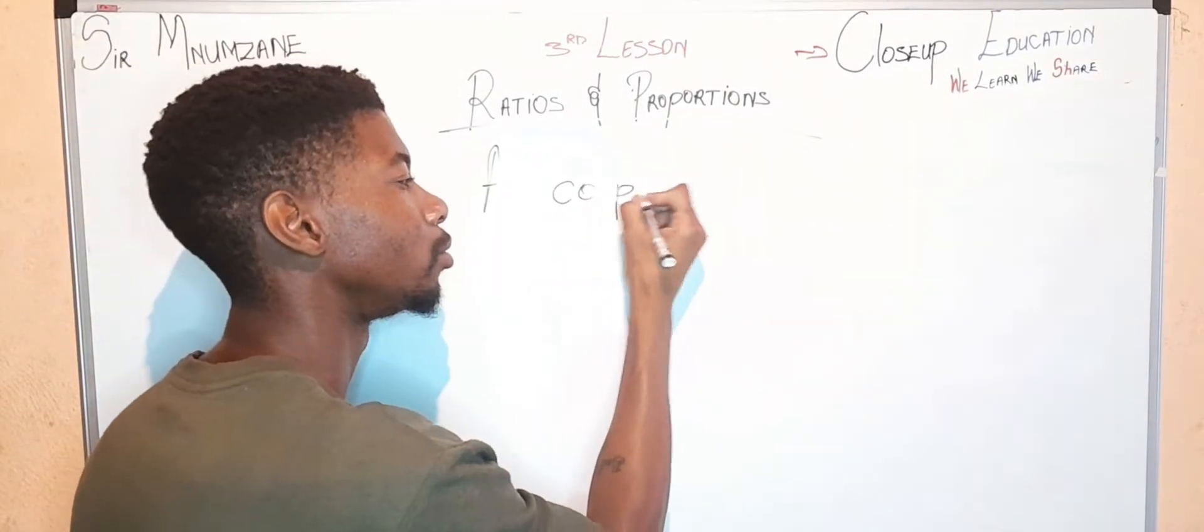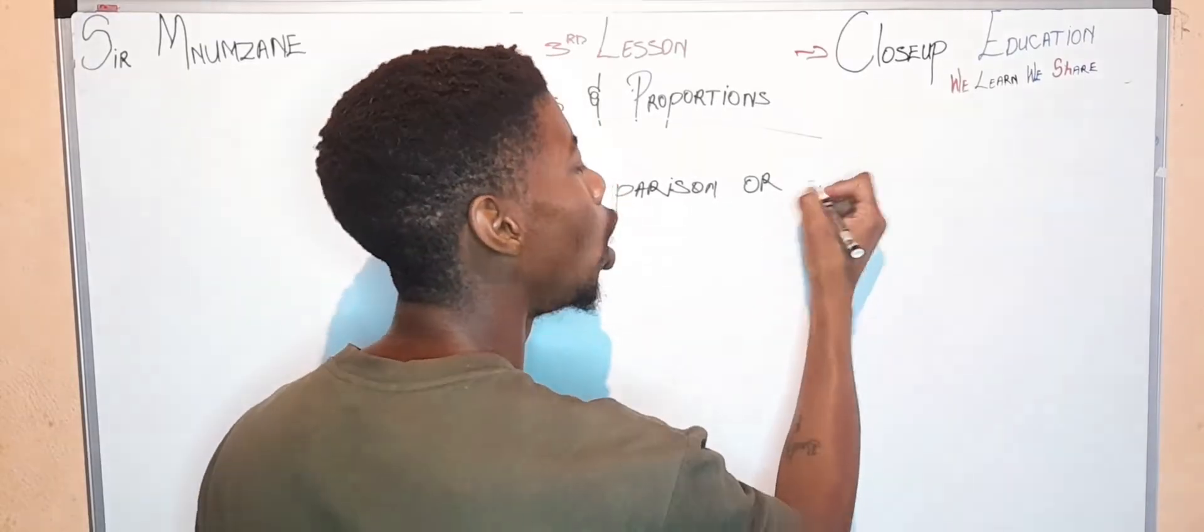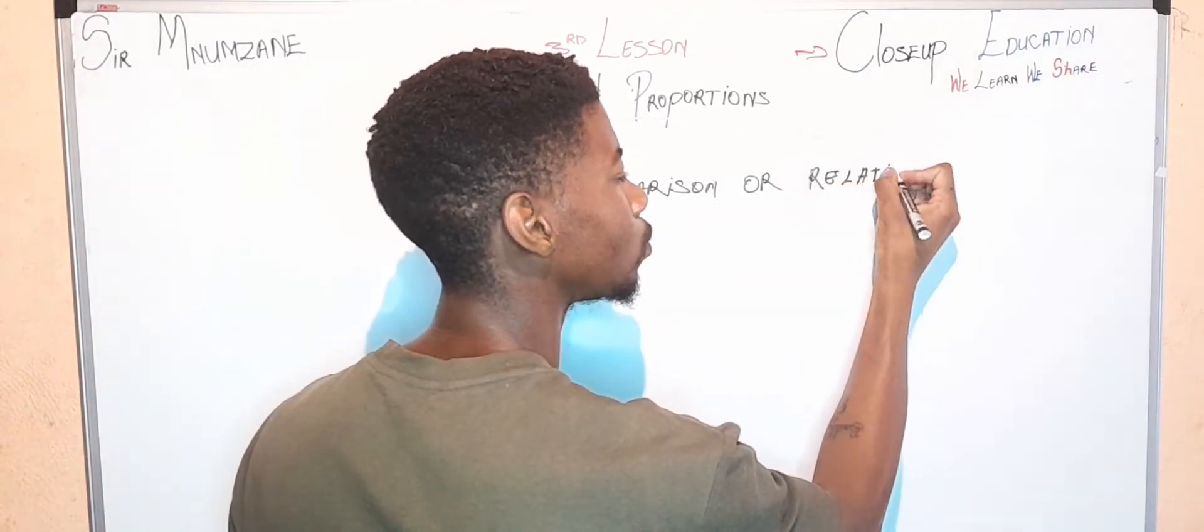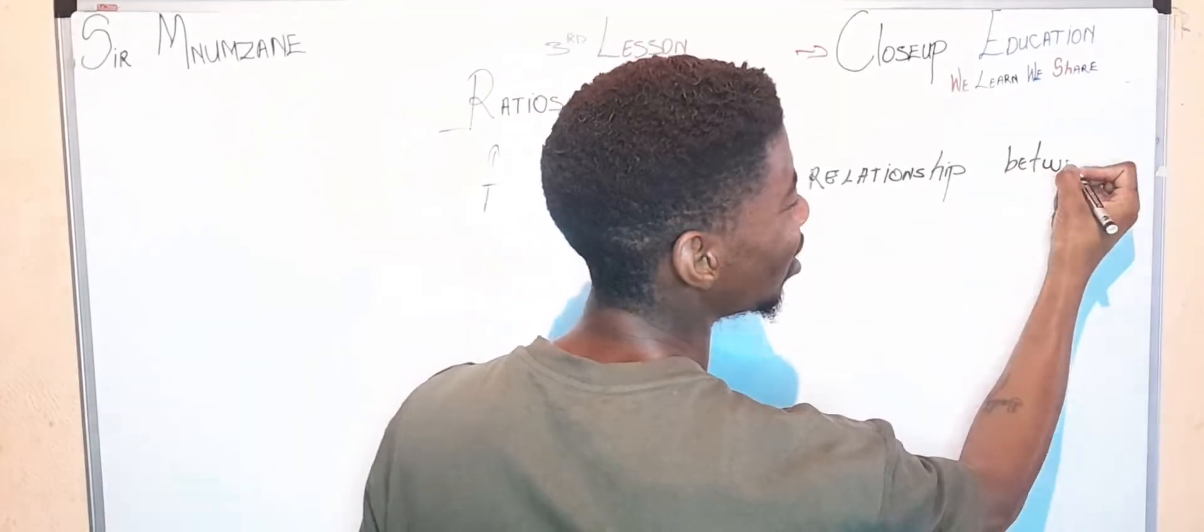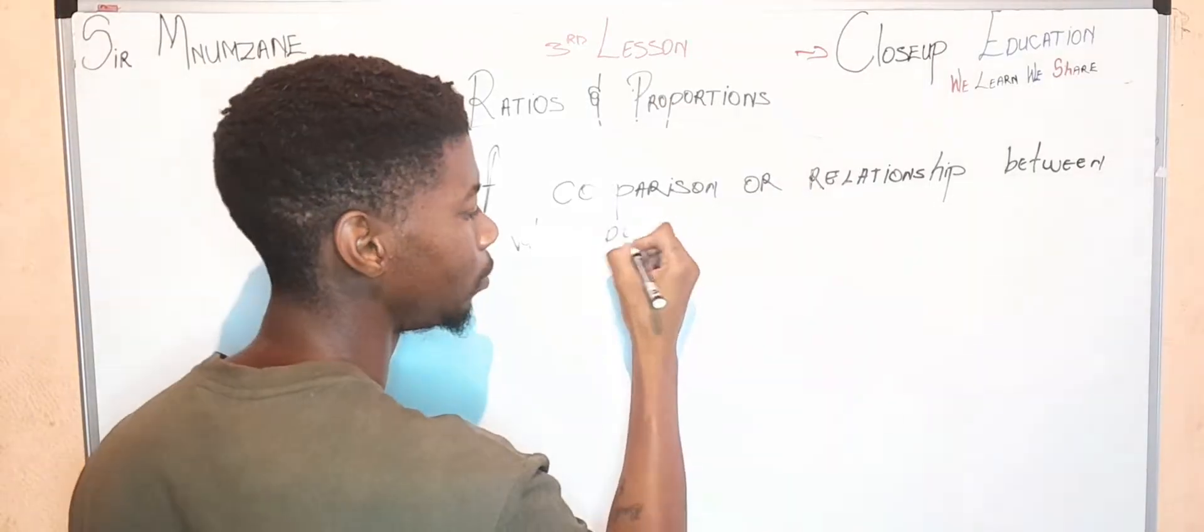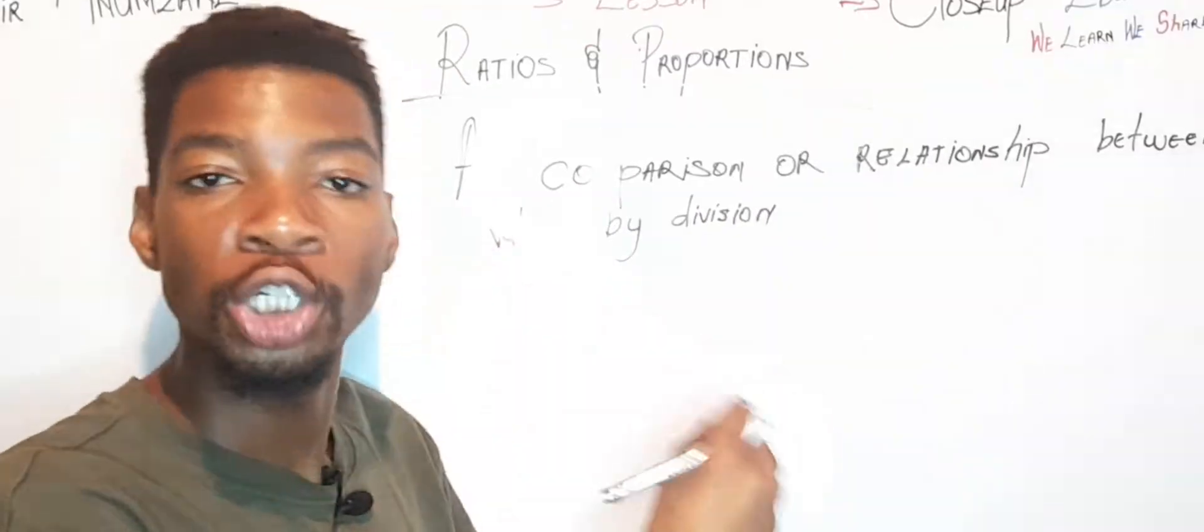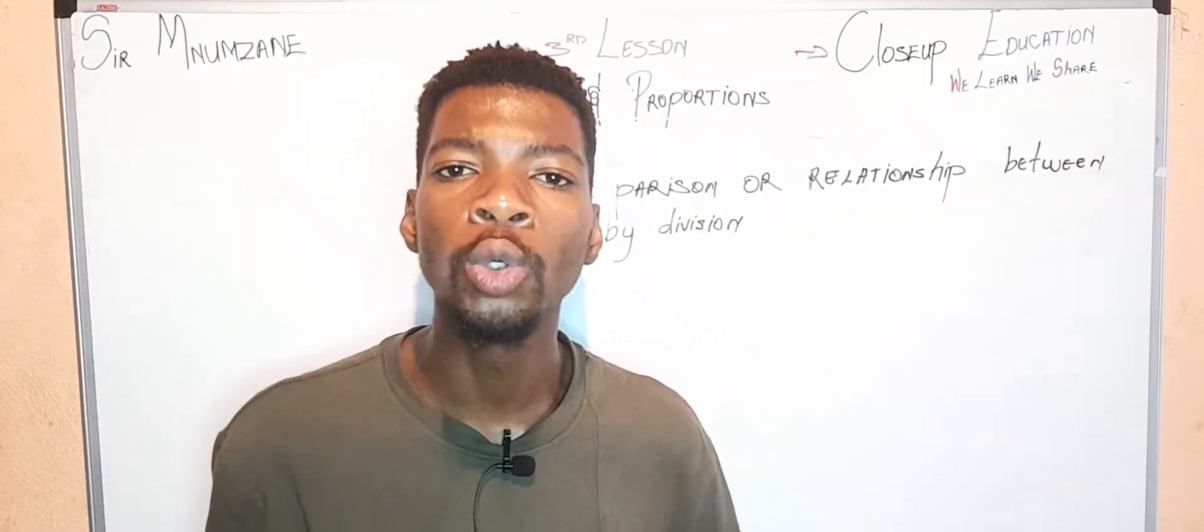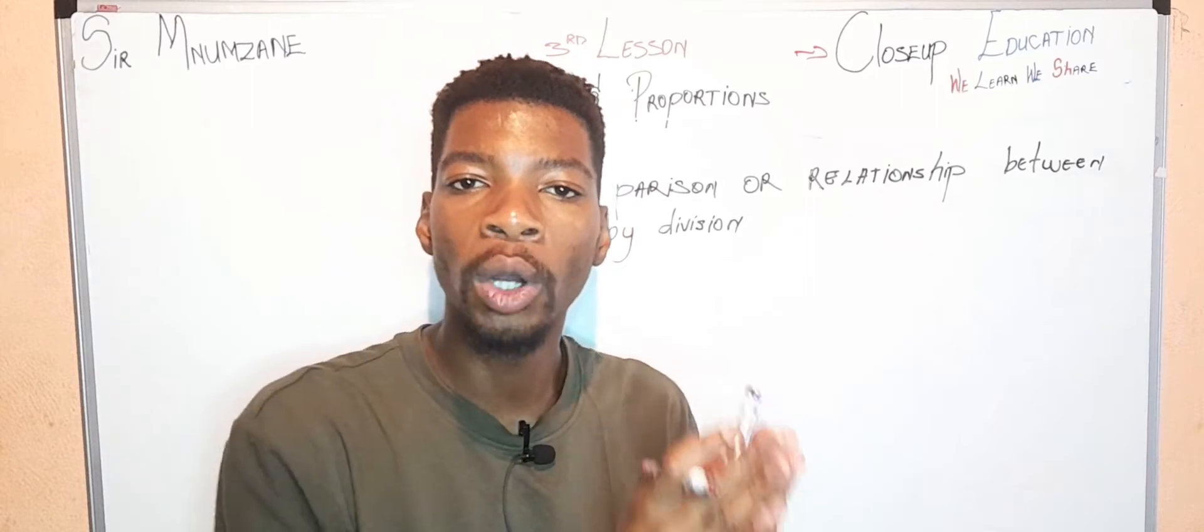Let me write it down: a comparison or relationship between values by division. Yes, we use ratios to compare relationships between values by division.